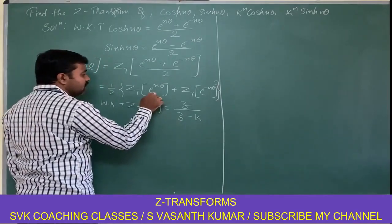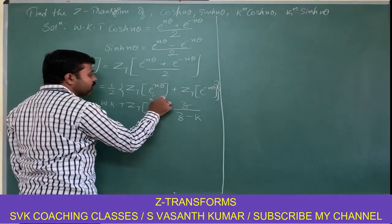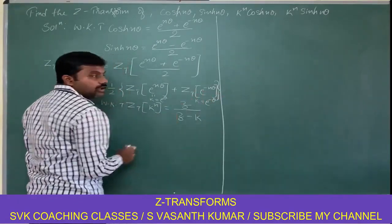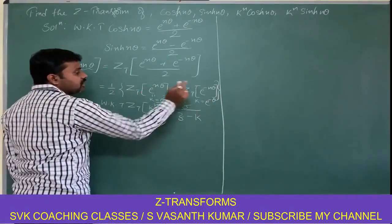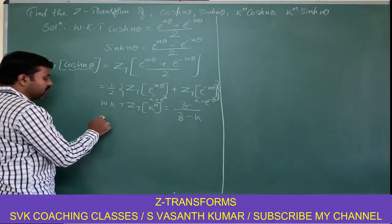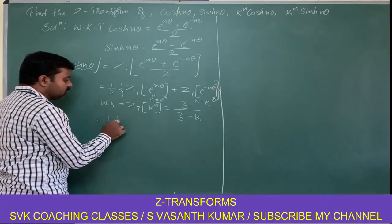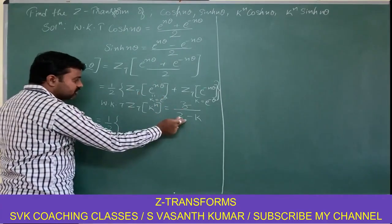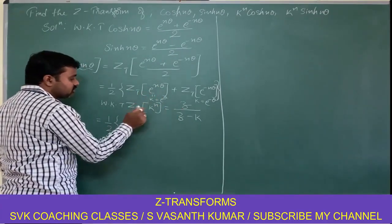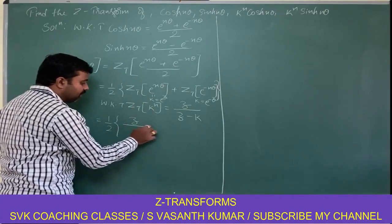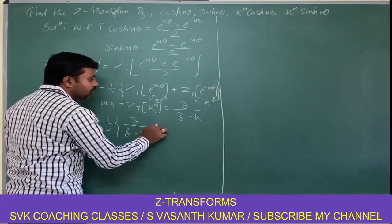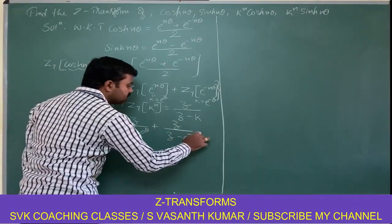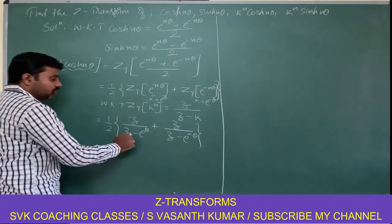Here k is e power theta for the first term, and k is e power minus theta for the second term. Therefore applying the definition, we get 1/2 times of z by z minus e power theta, plus z by z minus e power minus theta.